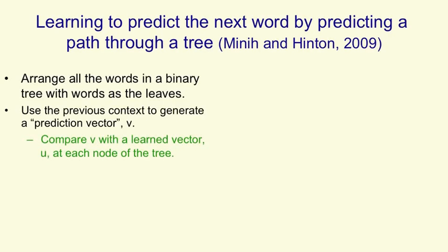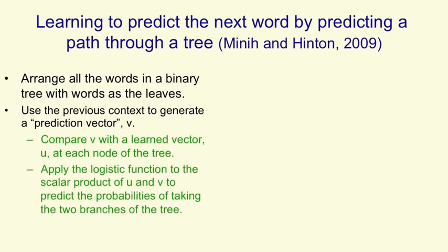We compare that prediction vector with a vector that we learn for each node of the tree. The way we do the comparison is by taking a scalar product of the prediction vector and the vector that we've learned for the node of the tree. And then we apply the logistic function to that scalar product.